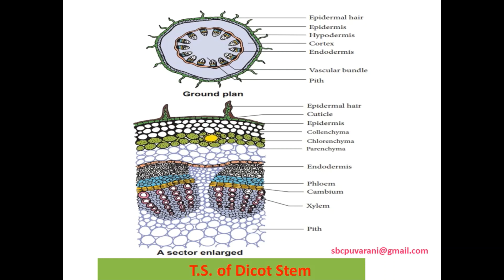Endodermis cells are barrel-shaped, closely fitted and contain starch grains. It is called the starch sheath. Vascular bundles are placed towards the epidermis rather than towards the center. The pith is the largest portion of the stem. It is made up of colorless, thin-walled parenchymatous cells with a lot of intercellular space.